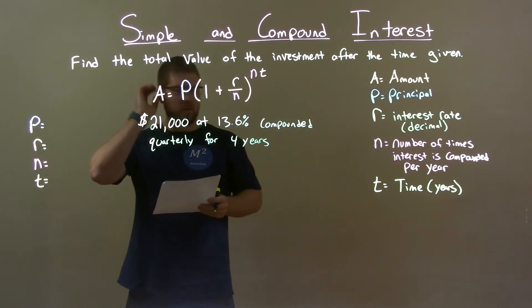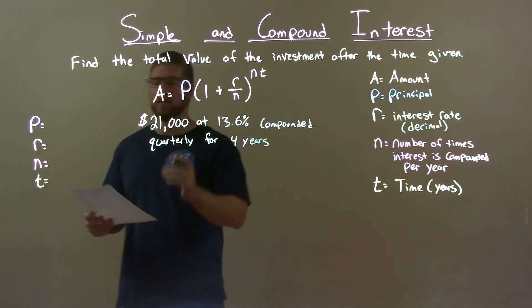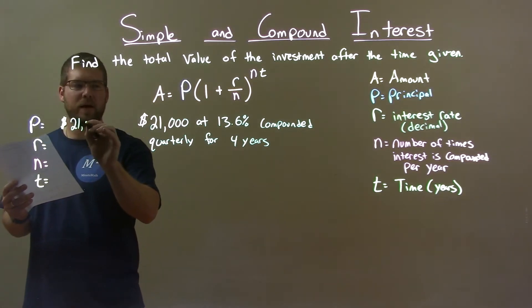Alright, well, what I want to do is first take from that word problem and find my variables needed. Principle, first thing that's written here, my starting amount, $21,000.